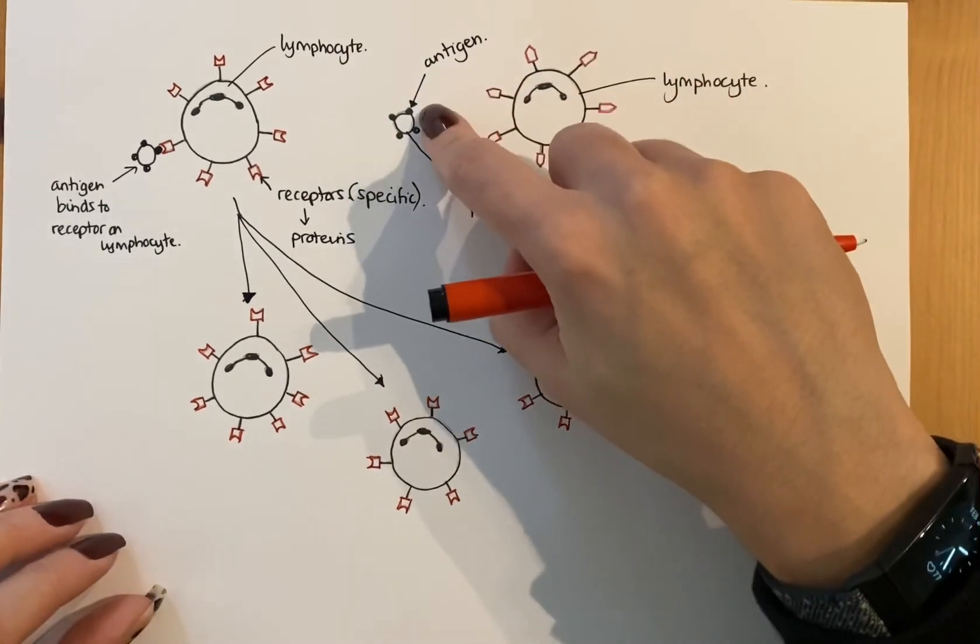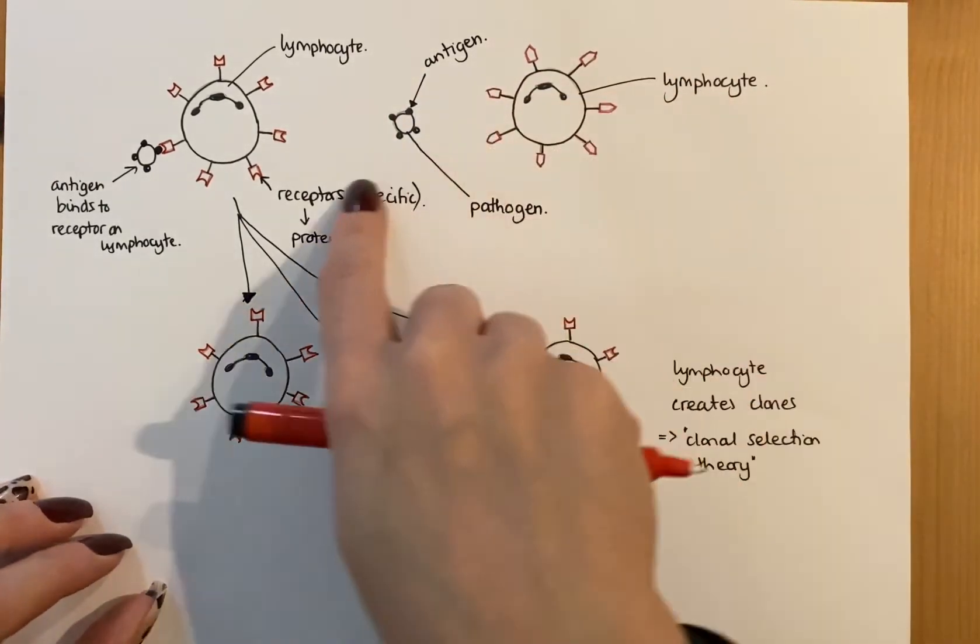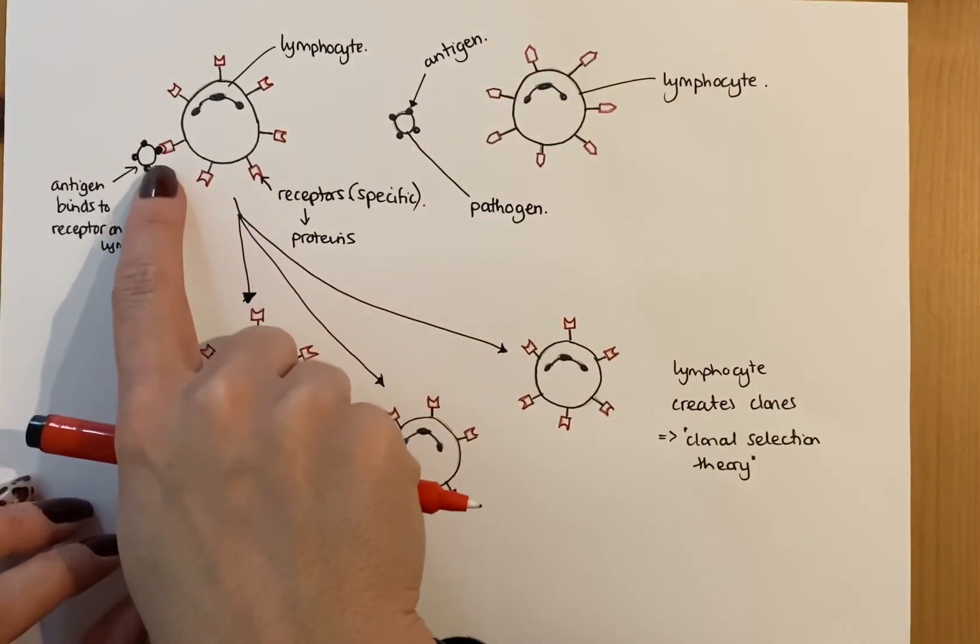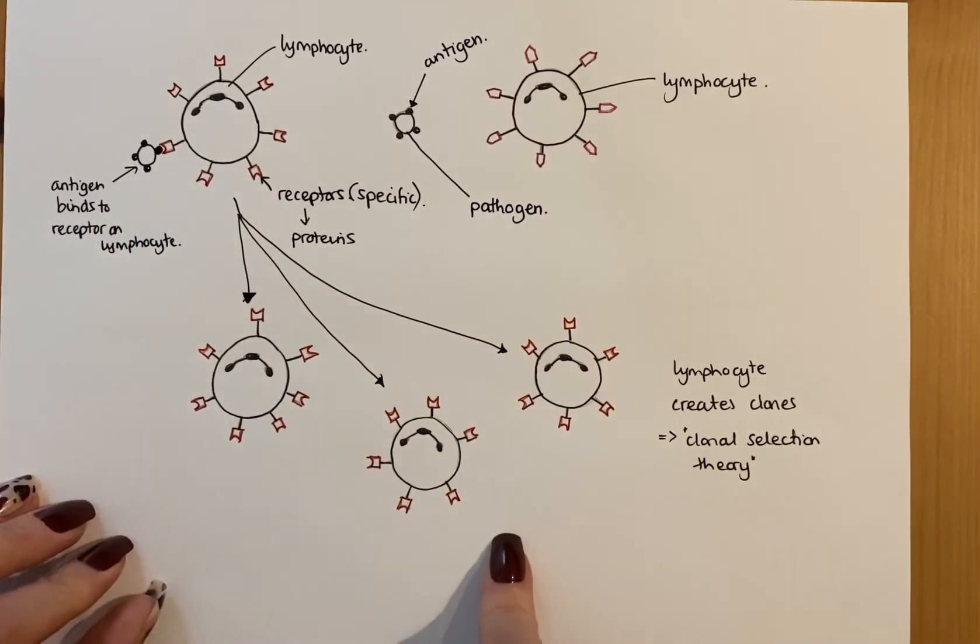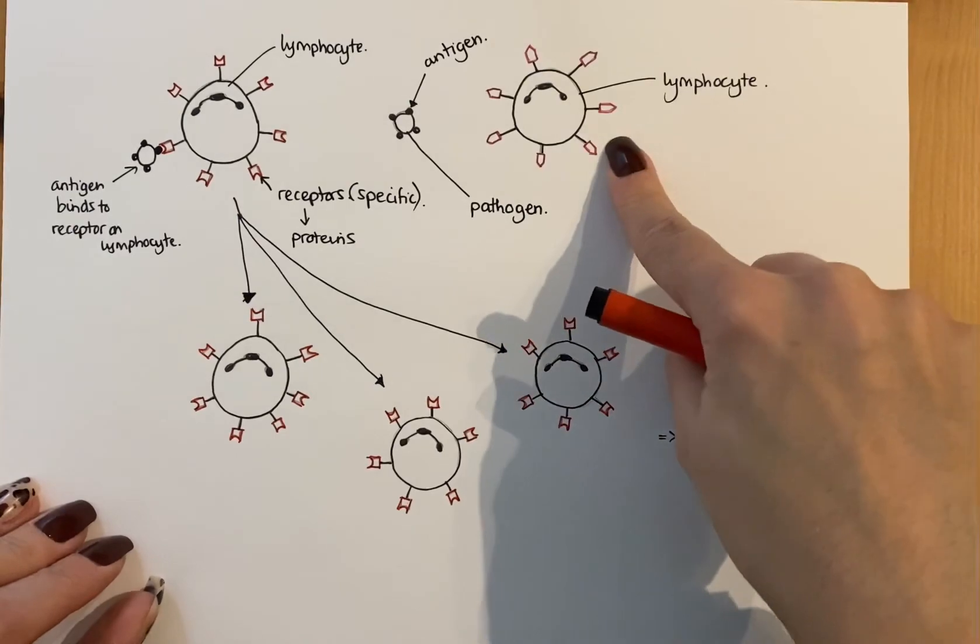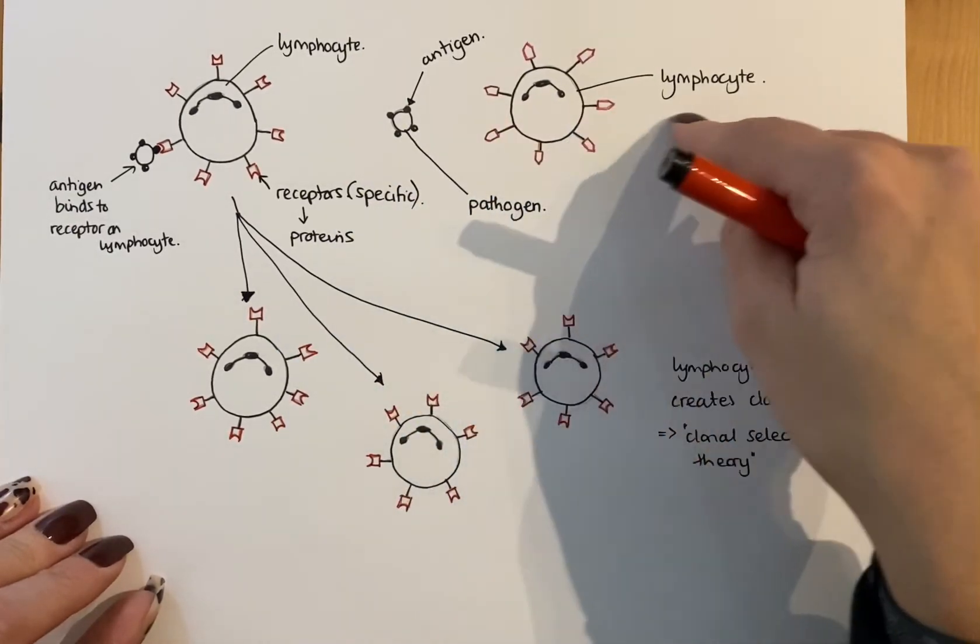So if you come across a particular antigen, it will bind to the specific receptor and the specific lymphocyte that will match it, and then these will produce clones. This one doesn't produce clones because it's not bound to the antigen because it doesn't fit.